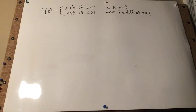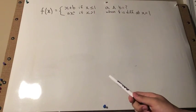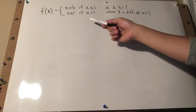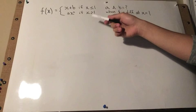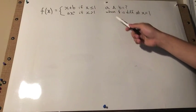This is basically a piecewise function. f of x equals x plus b if x is less than or equal to 1, and f of x is equal to ax squared if x is greater than 1.